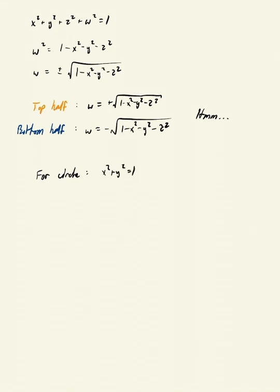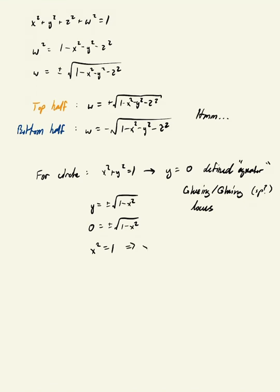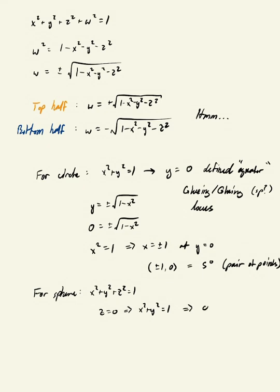For the circle, remember that we had a level set at zero, and that defined a sort of equator for the circle. It was only a pair of points, but it defines what we call a gluing locus. That gluing locus is just a pair of points here, but it's an analog for a zero-dimensional sphere - just a pair of two disjoint points. We can get something similar for the sphere. The zero locus of the equator, the gluing locus, is at z equals zero. That defines a circle, and the circle is the gluing locus, which is the equator.